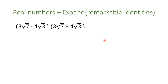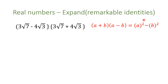The last remarkable identity is in the form of (a + b)(a − b), which equals a² − b². In this example: (3 radical 7 − 4 radical 3)(3 radical 7 + 4 radical 3). I encourage you to pause the video and try to solve it alone.